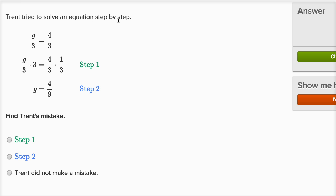Trent tried to solve an equation step by step. All right, find Trent's mistakes. A lot of mistakes happening in algebra problems right now. So g over three is equal to four over three. And let's see, the first step, g over three times three. So he's multiplying the left-hand side times three. And on the right-hand side, he's multiplying by one-third.